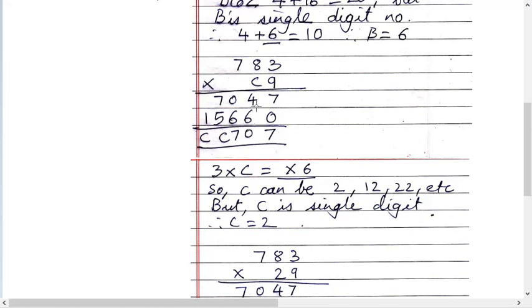Now it can be 6 or 3 into any number. It can't be 16 because 3 into anything is not 16. Then it can be 26 can be there. So 36 can be there. So what can be C then?